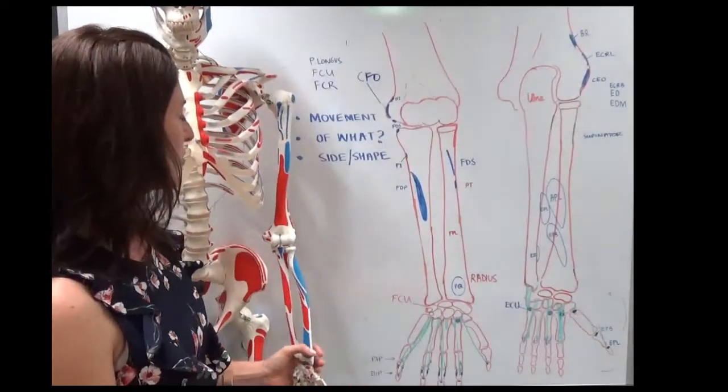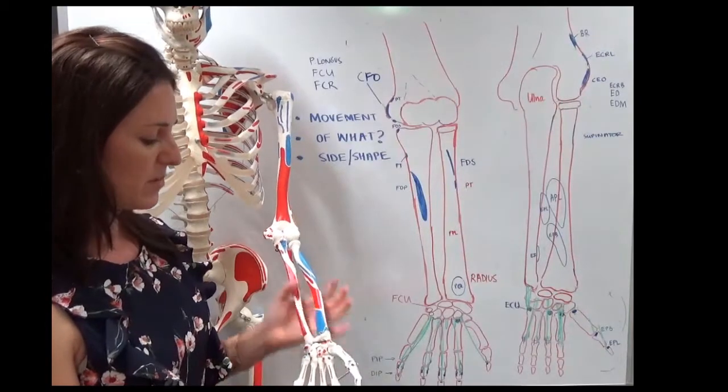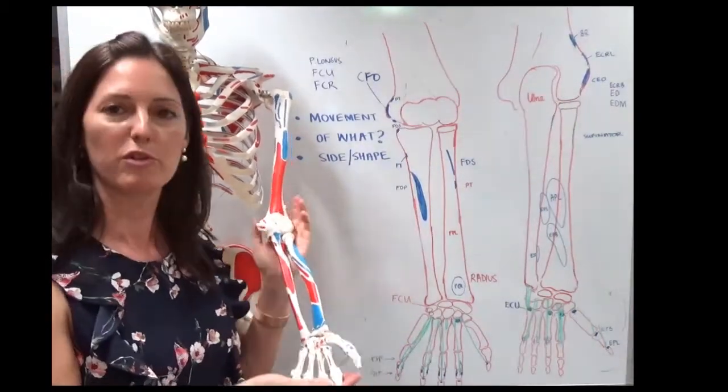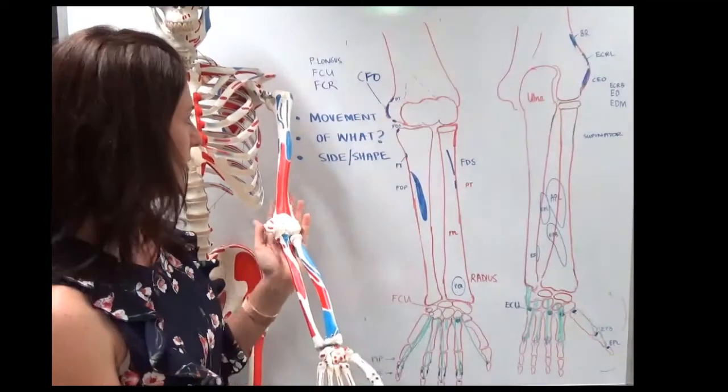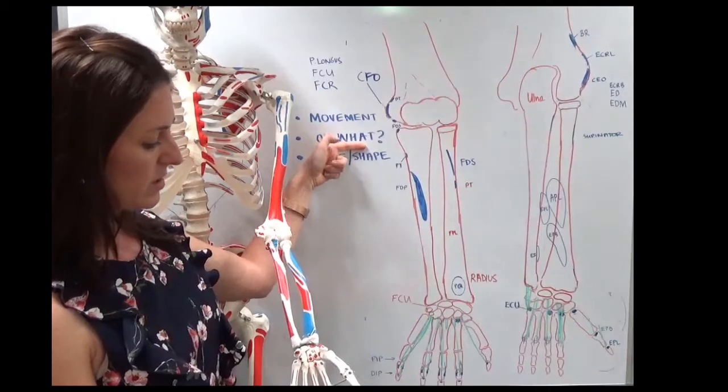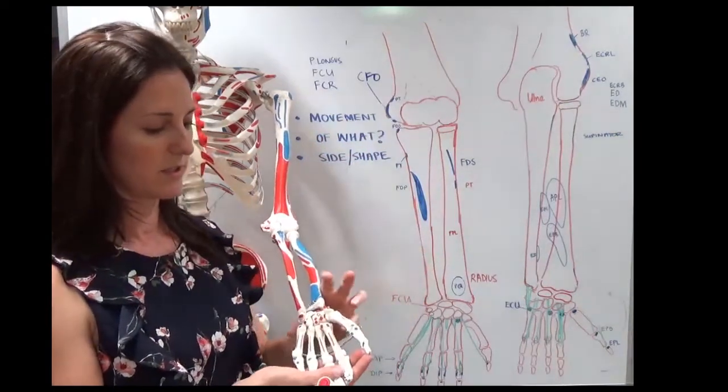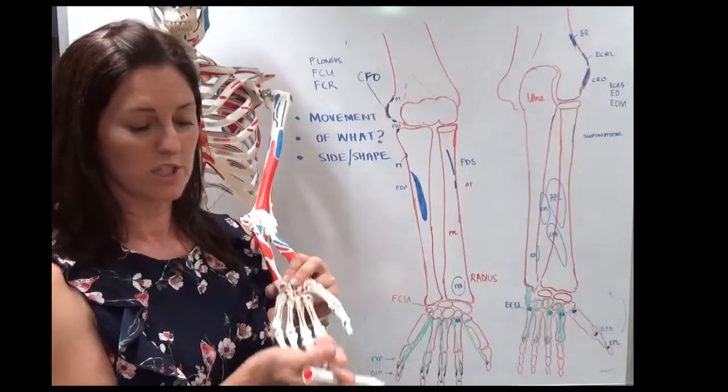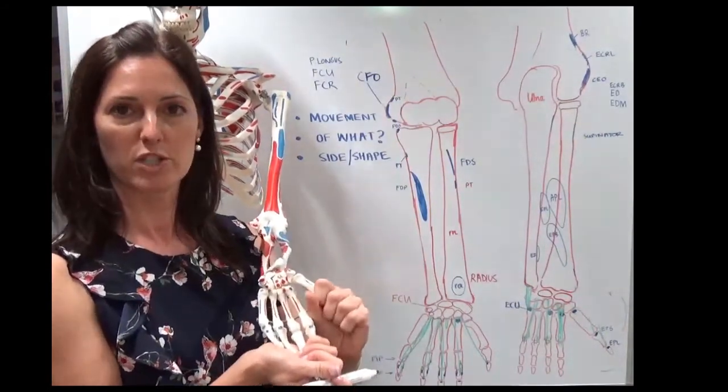So anatomists came up with a very simple system. When they came across a muscle or a tendon, they would look at what movement does it perform if you contract the muscle. So they would name it by the movement first, then they would say what it moves, whether it's moving the wrist, which is the carpus, or the fingers, which is the digitorum, or the thumb, which is the pollicis.